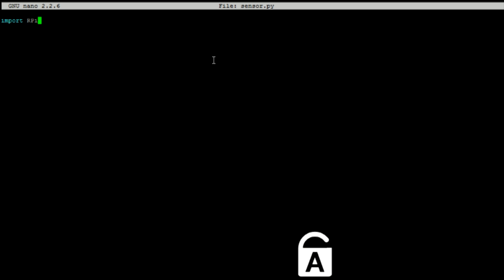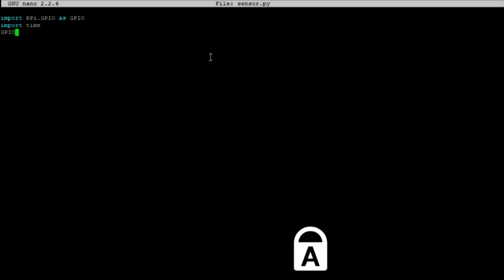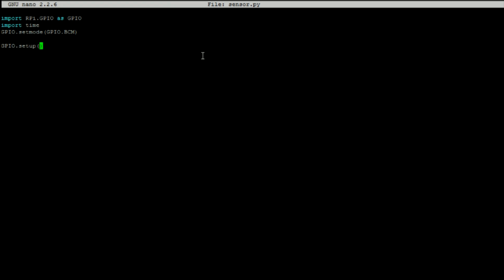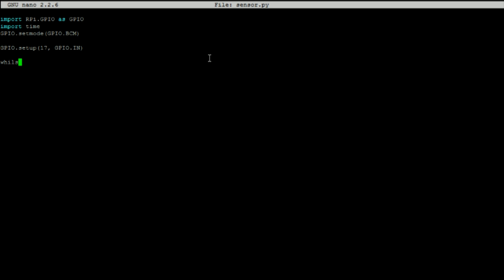Let's begin this file by importing the GPIO library, and then importing time. This will allow us to add a delay later and declaring that we would like to use the Broadcom pin numbering system. Now let's declare that we would like GPIO 17 as an input.